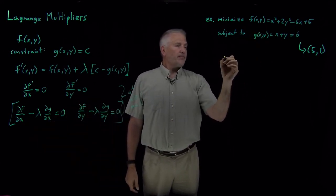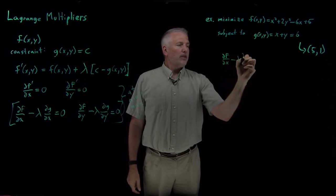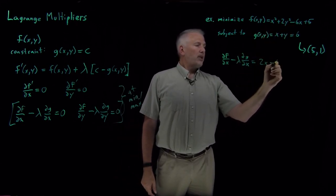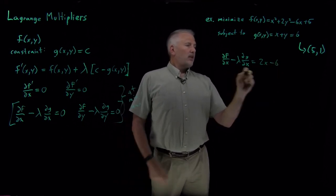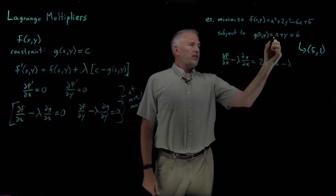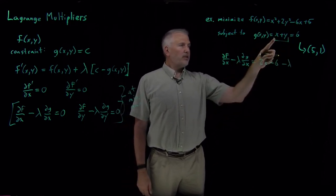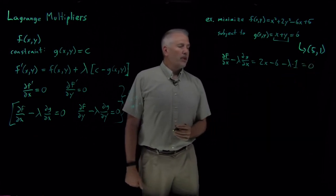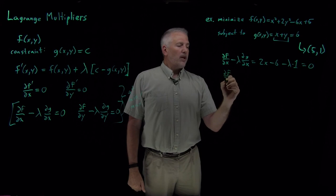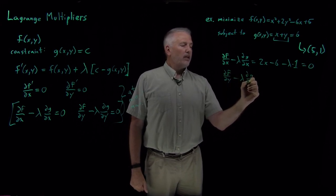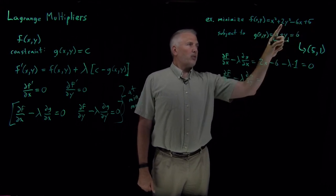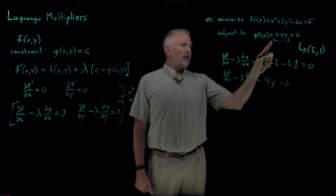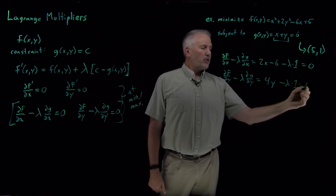Taking the derivative of f with respect to x: df/dx minus lambda times dg/dx. Here df/dx is 2x − 6. We subtract lambda times dg/dx; since g(x,y) = x + y, the derivative with respect to x is 1, giving lambda times 1. That must equal zero at the minimum. Likewise for y: df/dy minus lambda times dg/dy. The derivative of f with respect to y gives 4y, minus lambda times dg/dy, where the derivative of g with respect to y is 1. That must also equal zero at the minimum.